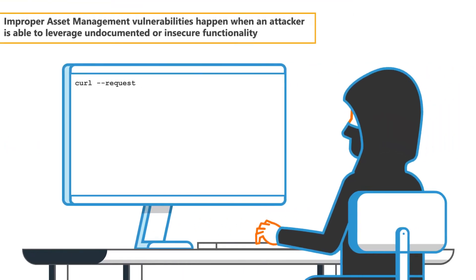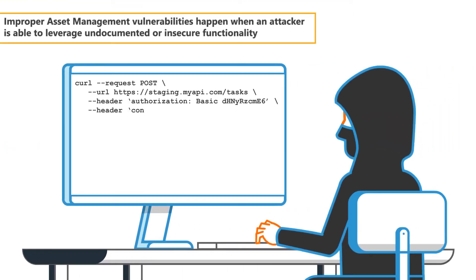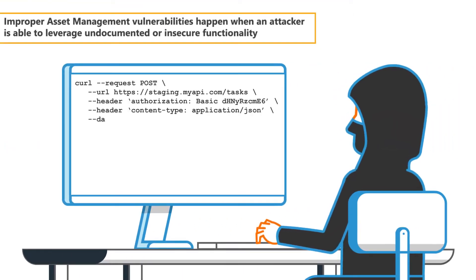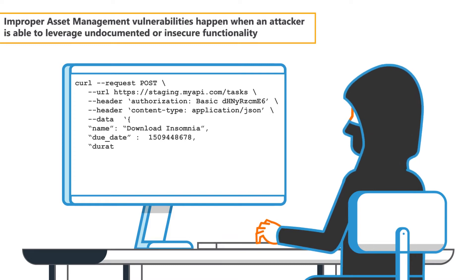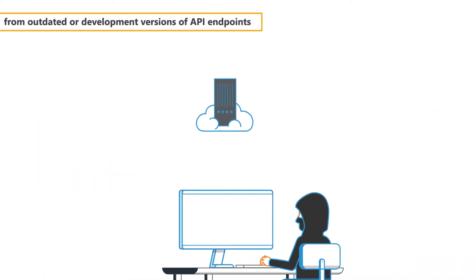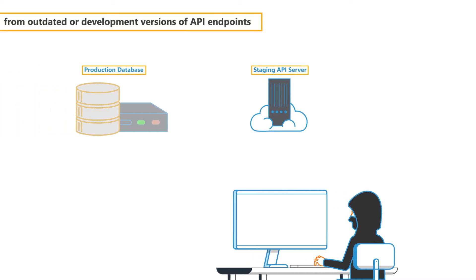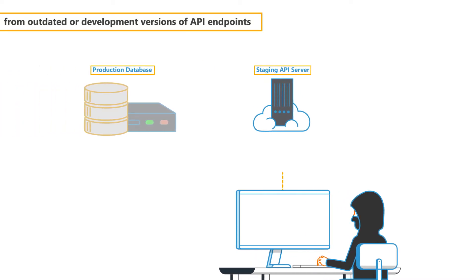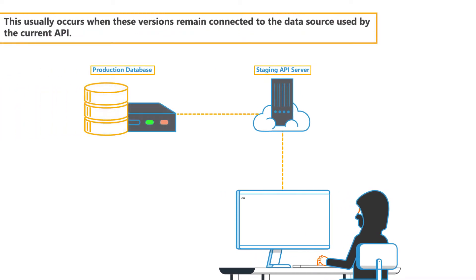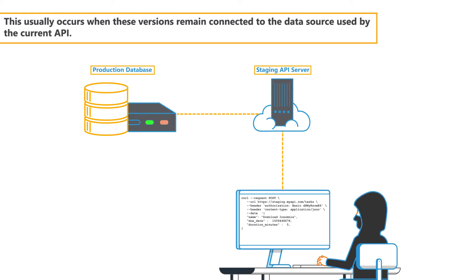Improper asset management vulnerabilities happen when an attacker is able to leverage undocumented or insecure functionality from outdated or development versions of API endpoints. This usually occurs when these versions remain connected to the data source used by the current API.